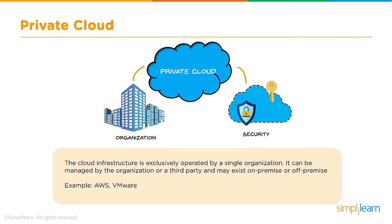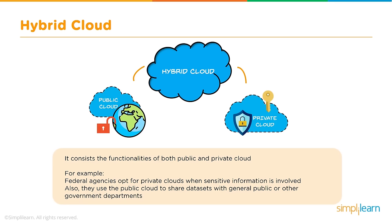Private cloud infrastructure is exclusively operated by a single organization. It can be managed by the organization or a third party, and may exist on-premises or off-premises. The key point is that it is exclusively operated for a single organization. Some companies that provide private cloud are AWS and VMware. Hybrid cloud is the best of both public and private cloud. For example, federal agencies opt for private clouds for storing and managing personal data, and use public cloud to share non-sensitive data with the general public or other government departments.